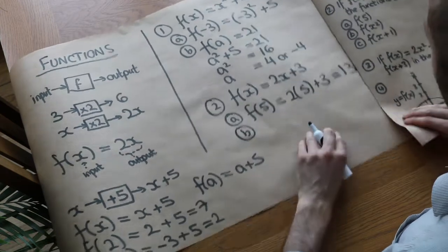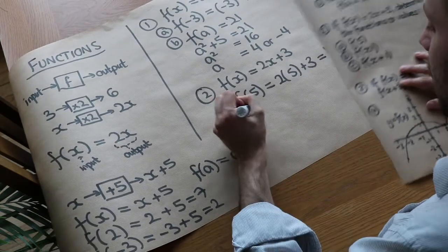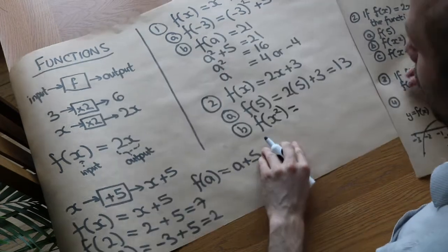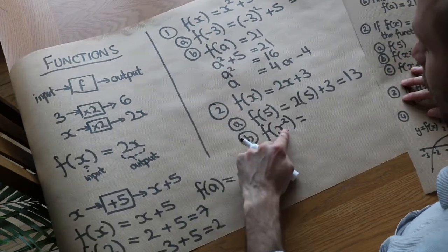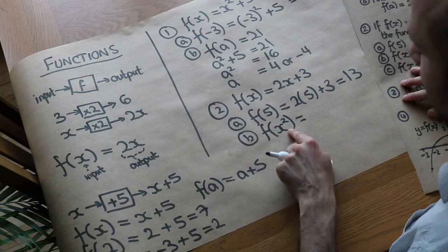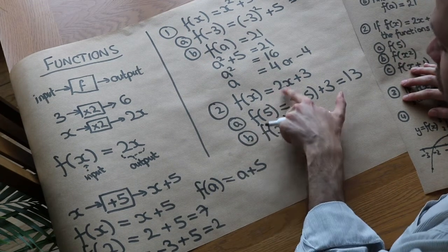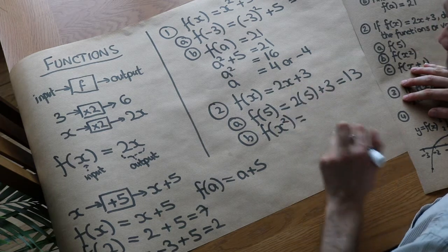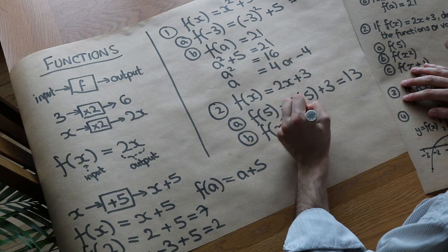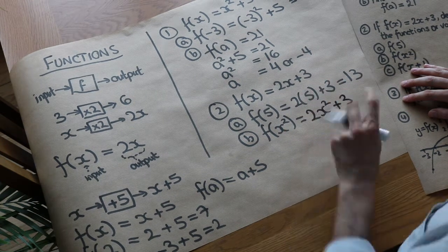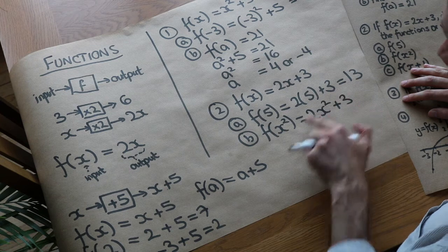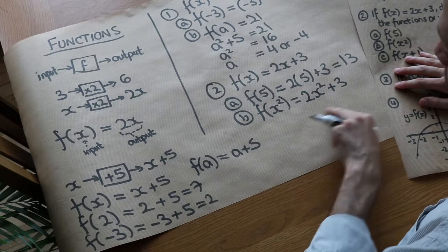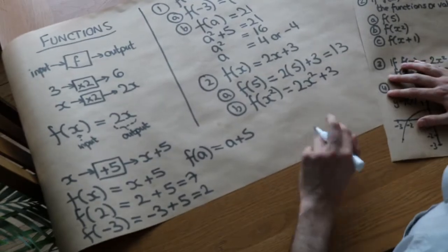Then we've got the second part: f of x squared. This is slightly different, but the principle is exactly the same. We substitute every occurrence of x for x squared, because the input is now x squared. So it's going to be two times x squared plus three — two lots of x squared plus three. Just like this is two lots of five plus three, we've now got two lots of x squared plus three. That is the answer — it's an algebraic expression rather than a numerical answer.